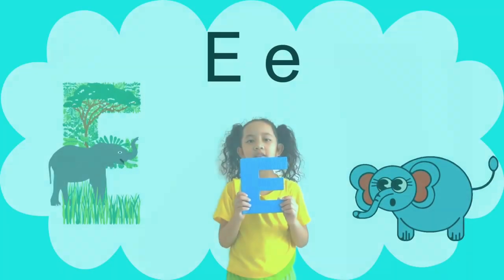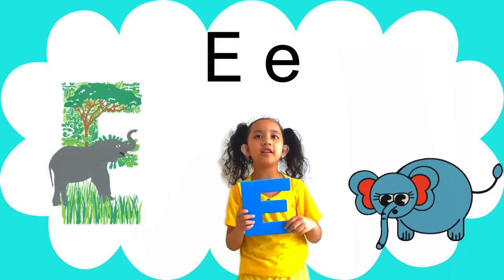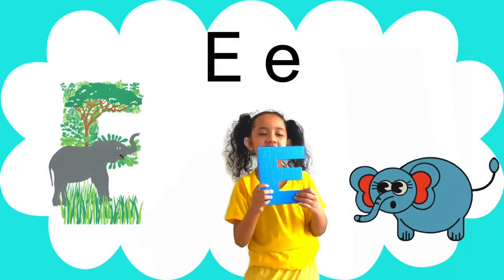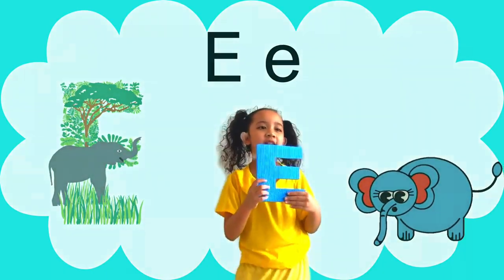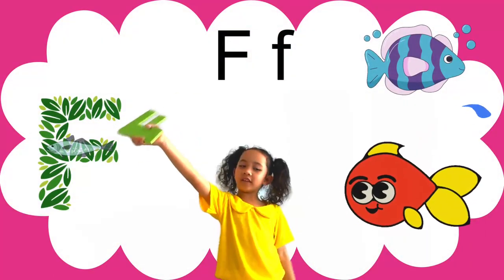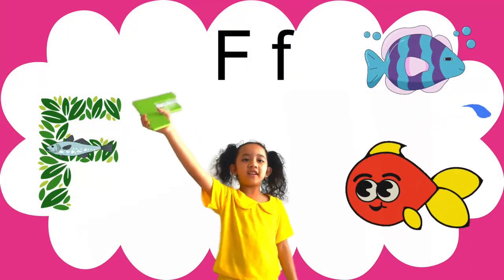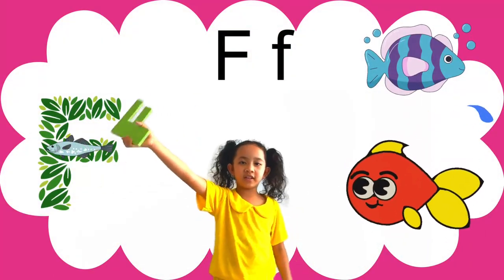E is for elephant, with a trunk so long. F is for fish, swimming in a song.